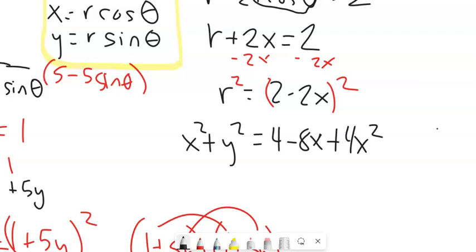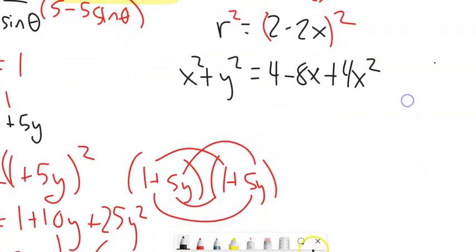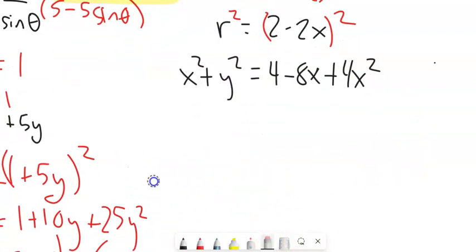And then what you could do is you could move everything over to the right-hand side, right? Subtract the 4x squared. So if I subtract the 4x squared, that gives me a negative 3x squared. That y squared's still there. Add the 8x.